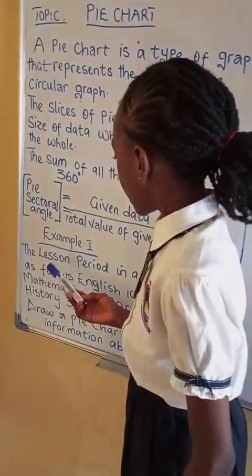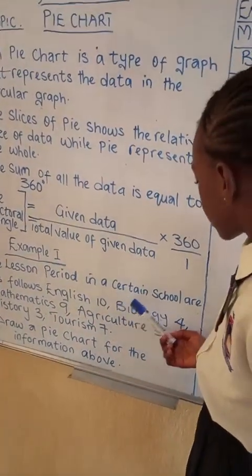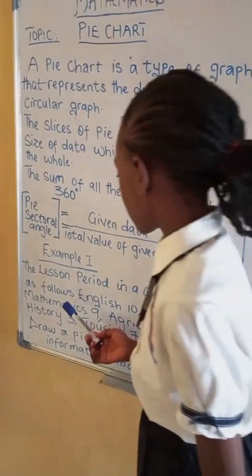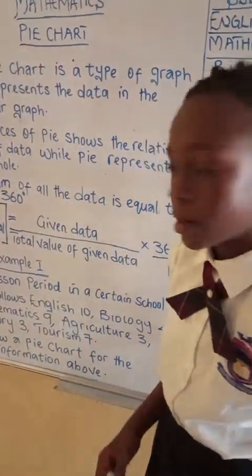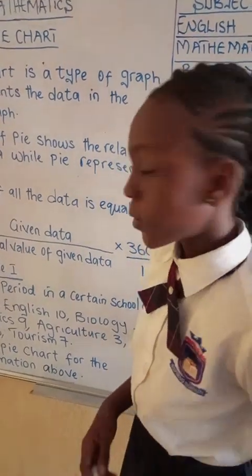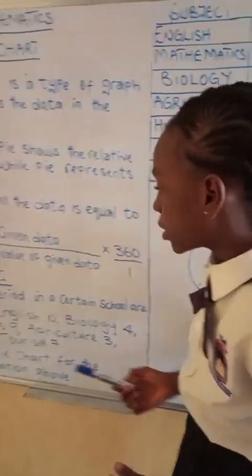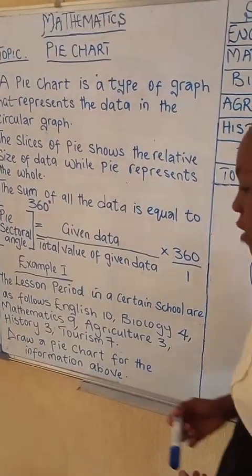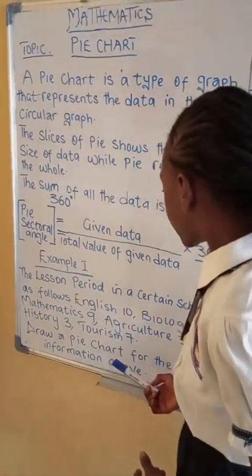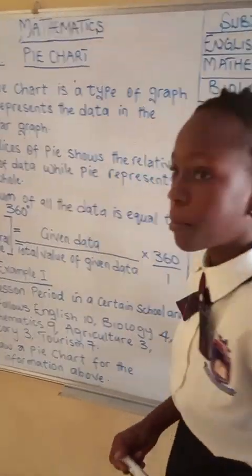Example 1. The lesson periods in a certain school are as follows: English is 10, Biology is 4, Mathematics is 9, Agriculture is 3, History is 3, Tourism is 7. Draw a pie chart for the information above.